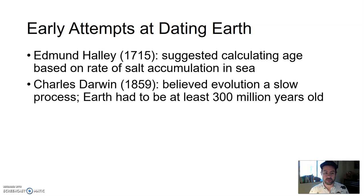Charles Darwin, 1859, believed evolution was a very slow process. His theory of evolution, highest level of knowing. Therefore, for what he saw, which was based on fossils, based on the fossil record, that's how he put together the theory of evolution. Earth had to be at least 300 million years old.